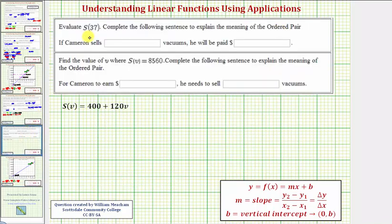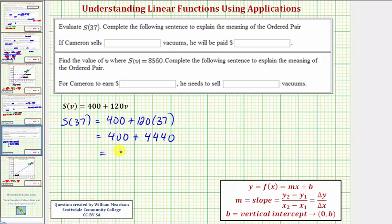Next we're asked to evaluate S(37) and then complete the sentence. So to evaluate S(37), we substitute 37 for V. So we'd have 400 + 120 times 37. So we have 400 + 4,440, which is equal to 4,840. So as an ordered pair, this would be the point (37, 4840), which means if Cameron sells 37 vacuums, he will be paid 4,840 dollars for his weekly salary.